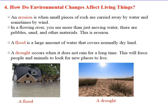We're going to see three environmental changes that affect living things. First, erosion — this is when small pieces of rock are carried away by water and sometimes by wind. In a flowing river, for example, you see more than just moving water: there are pebbles, sand, and other materials. This is erosion.